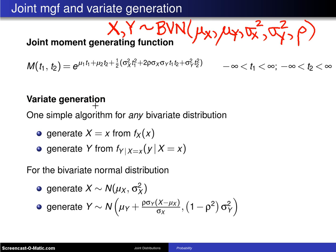The second topic is variate generation. One simple algorithm for any bivariate distribution is: first, generate X from its marginal distribution fX(x), and then once you have that X value, generate random variate Y from the conditional distribution of Y given X equals x.